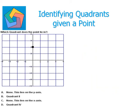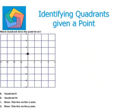Next example: which quadrant does the point lie in? We have the x-axis running horizontally and the y-axis running vertically. We can see that this point does not lie in any quadrant — it lies on the y-axis. So the correct answer is option A — none. This point lies on the y-axis and does not lie in any quadrant.